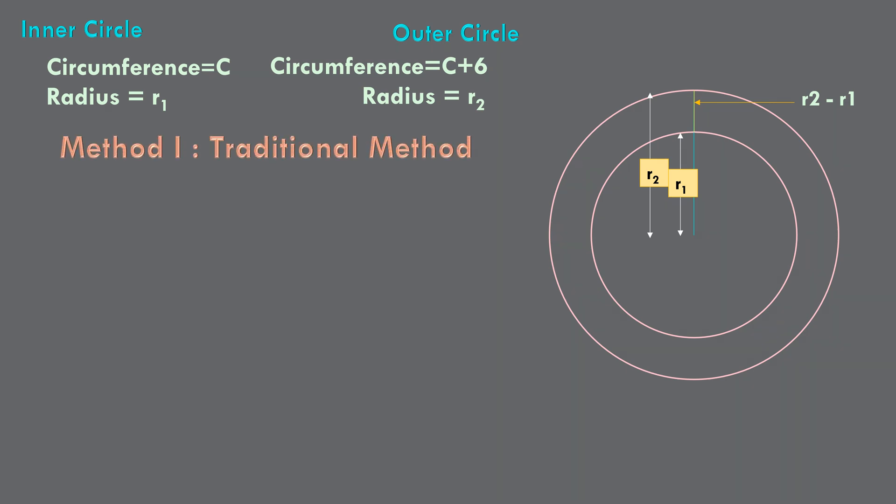Let's consider the inner circle. Here, C equals 2pi R1 because that's the formula for circumference of the circle. Therefore, R1 equals C by 2pi. Let this be equation 1.